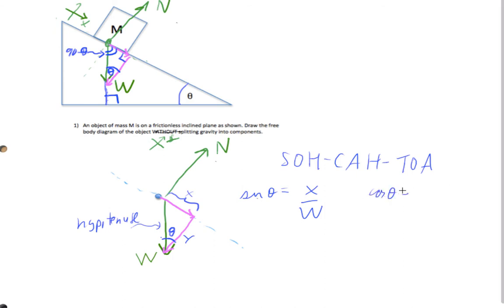And for the cosine of theta, we have y over w. And so what's going to end up happening is the x component of weight is going to be w sine theta. And the y component of weight is going to be w cosine theta.